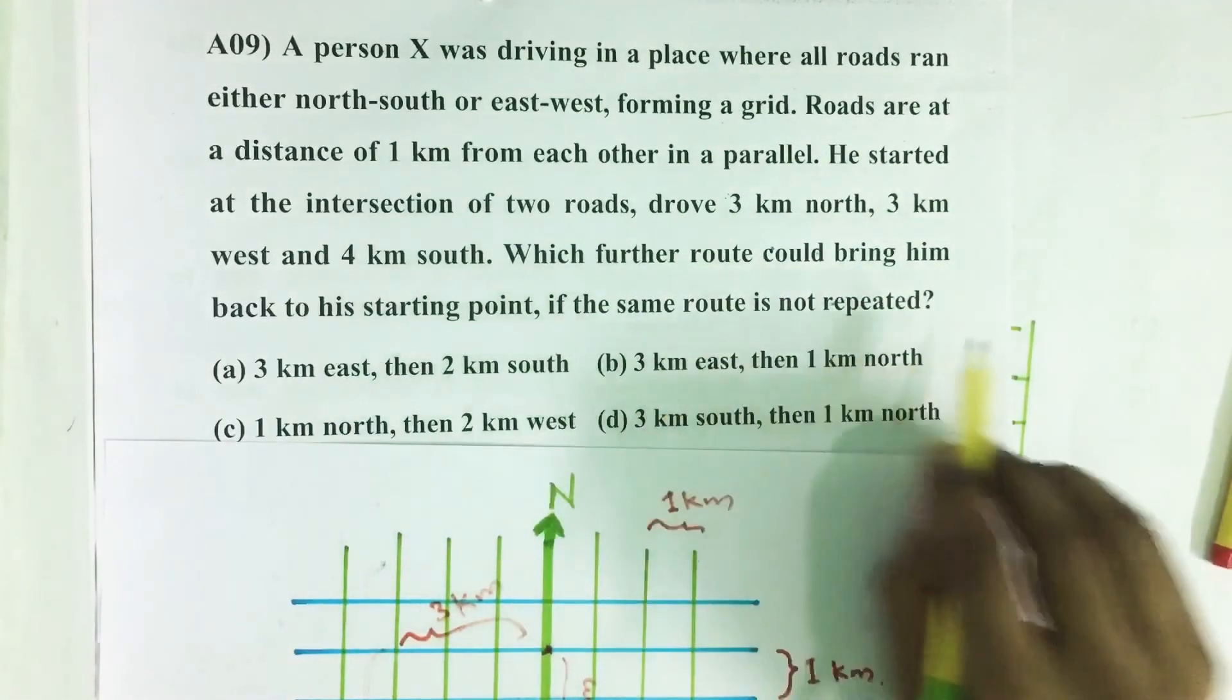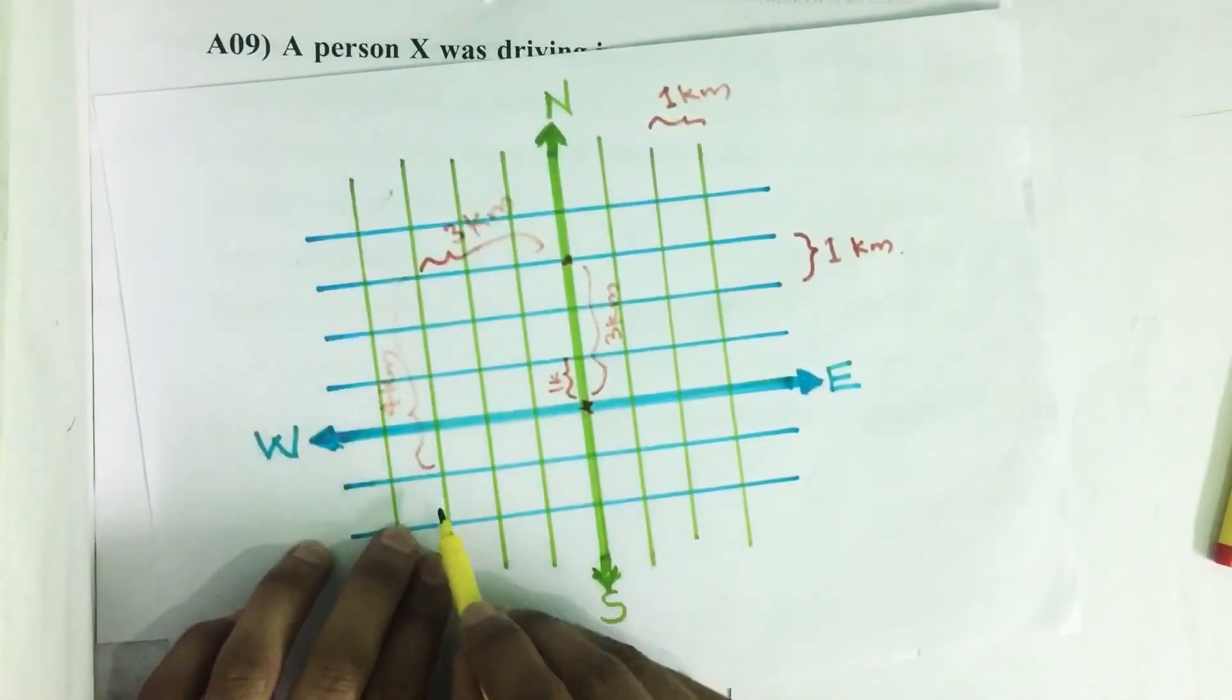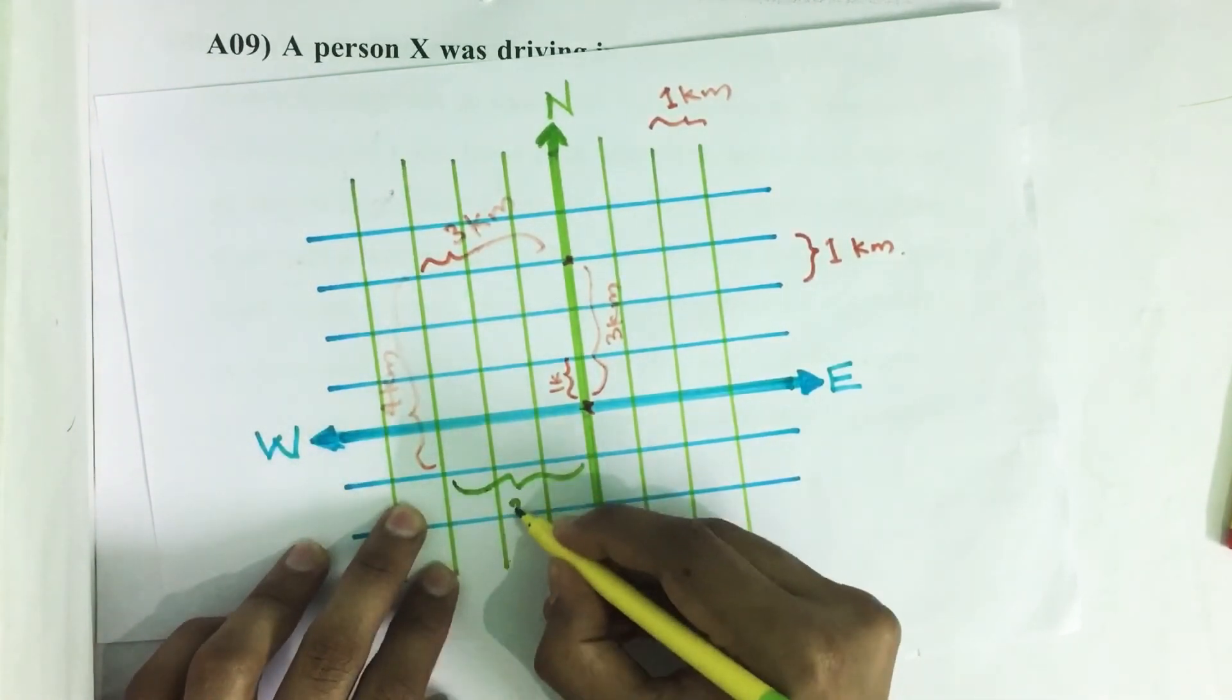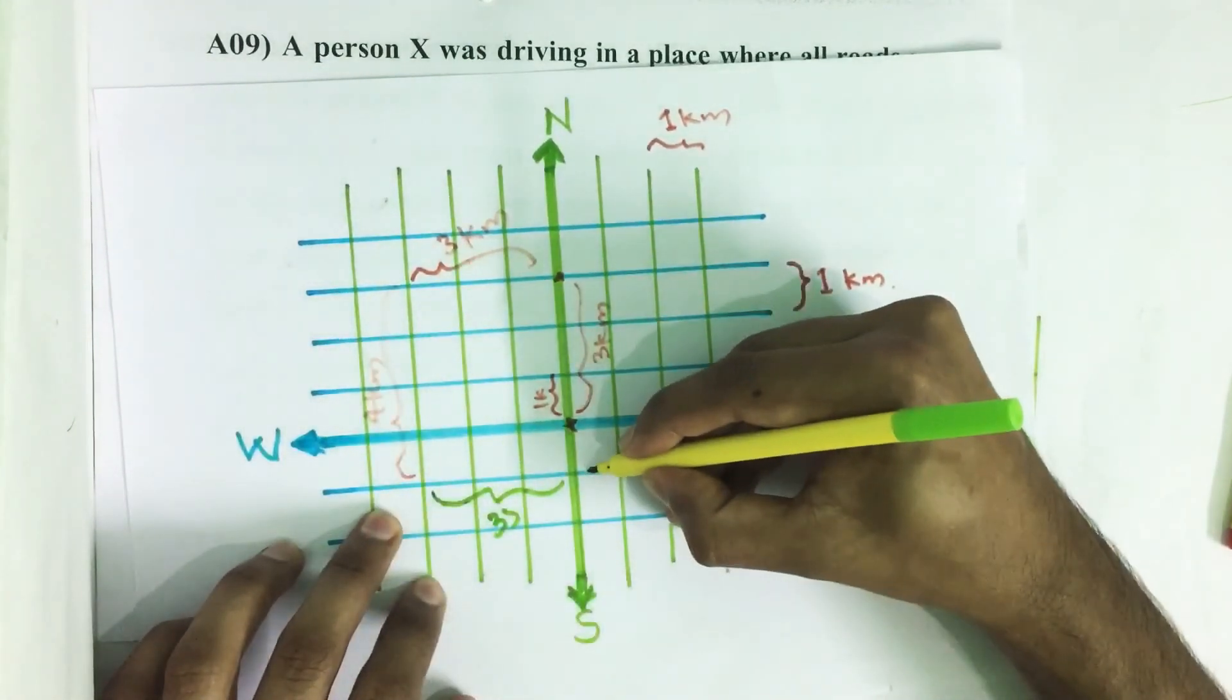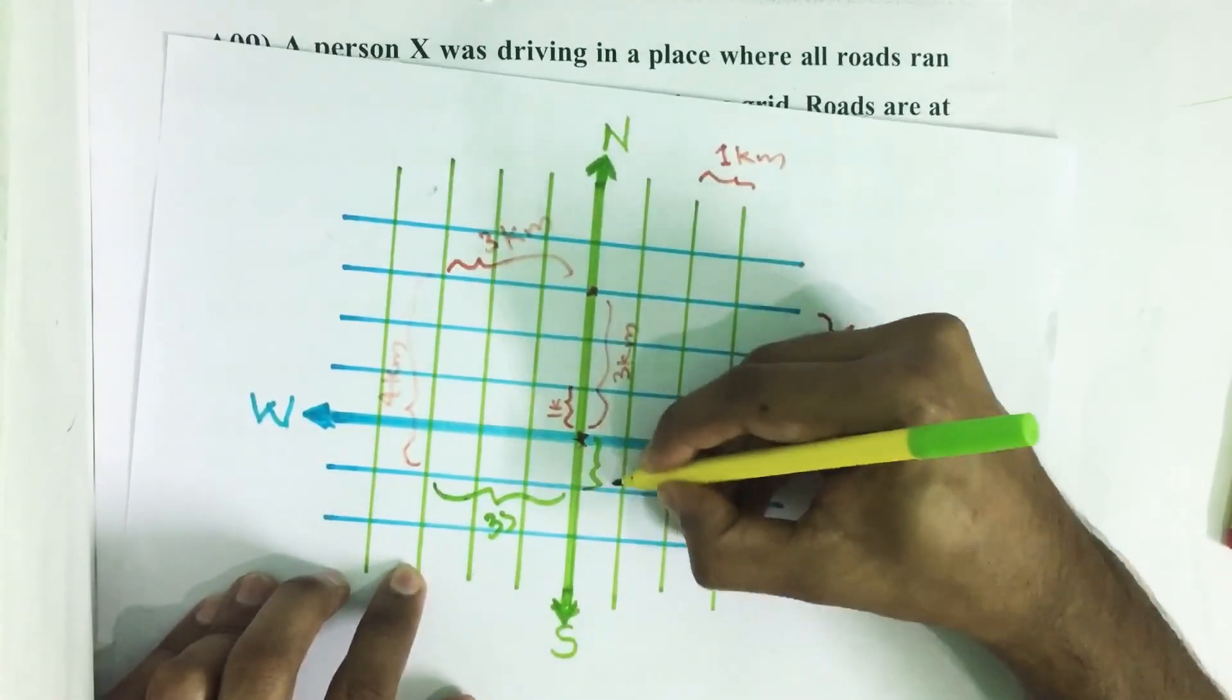The same route is not repeated. So it is clear that 3 kilometers south, then 3 kilometers east, then 1 kilometer north.